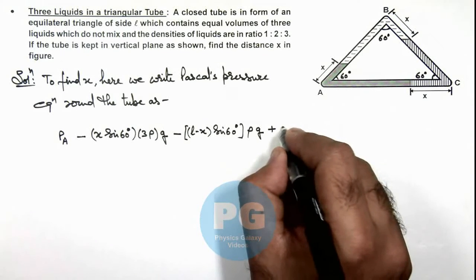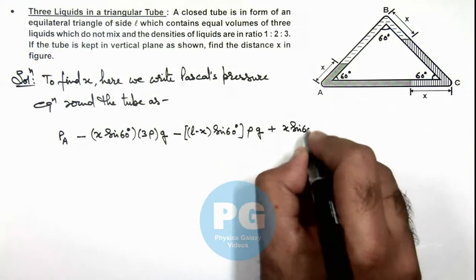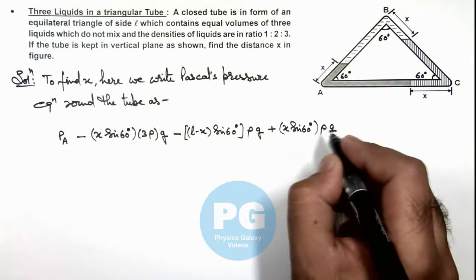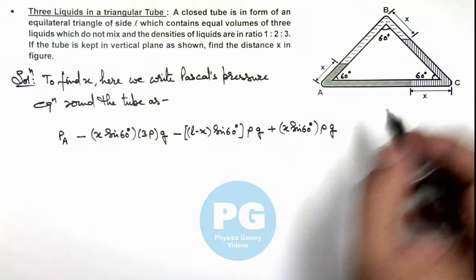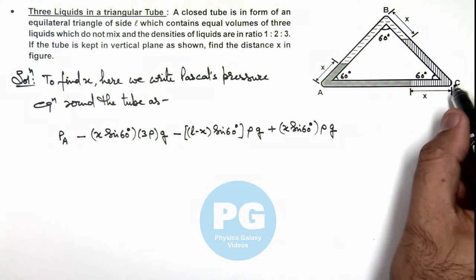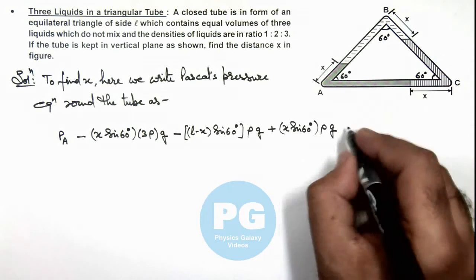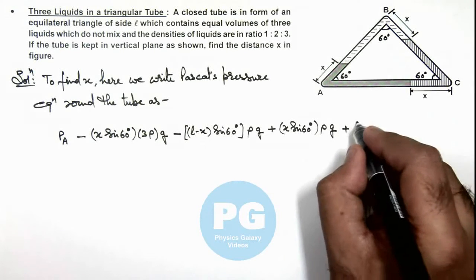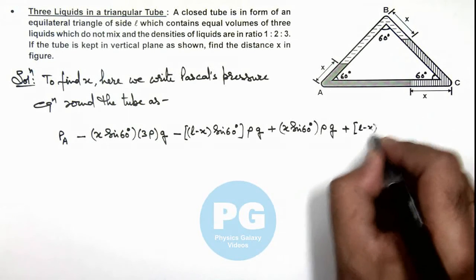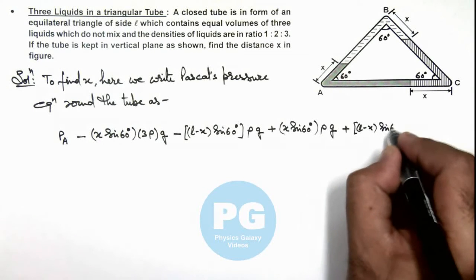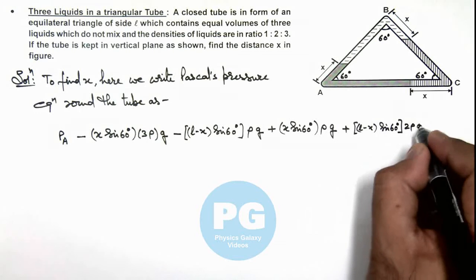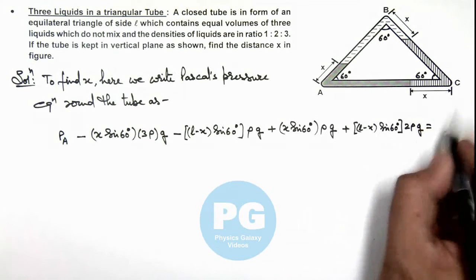Then if we further come down here, we can write plus. If we come down from this point to C, again it will be plus and the density will be 2ρ. So this is (l - x)·sin(60°)·2ρ·g, and this equals the pressure at point C.